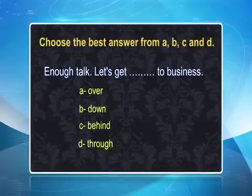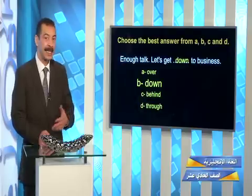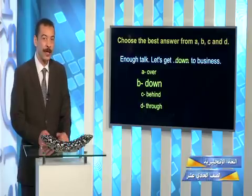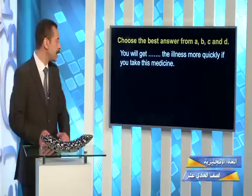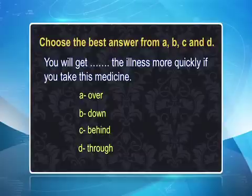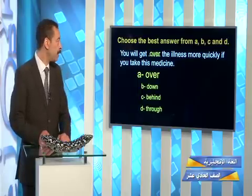Next: you will get blank the illness more quickly if you take this medicine. Is it get over, down, behind, or through? When you get ill, you need medicine to recover — get over. You will get over the illness more quickly if you take this medicine. Next: it's hard to get blank to Talal because his telephone line is always busy. We are talking about a telephone conversation and sometimes it's not easy to reach a person — the answer is get through, meaning to be able to talk to him on the phone.